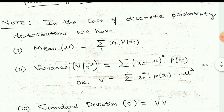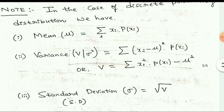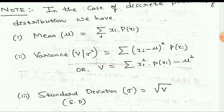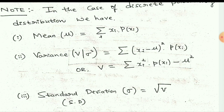Remember these two conditions: p(x_i) ≥ 0, and summation of p(x_i) = 1. Now for discrete probability distribution, remember three formulas: the formula for mean, variance, and standard deviation. Mean = Σ x_i · p(x_i). Variance = Σ(x_i − μ)² · p(x_i), which can also be written as Σ x_i² · p(x_i) − μ². Standard deviation is simply the square root of variance. Write down these three formulas, as we will use them throughout.